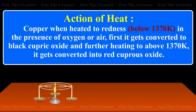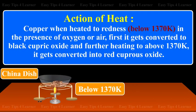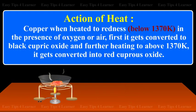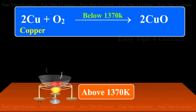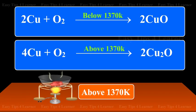Action of heat: Copper when heated to redness, i.e., below 1370 Kelvin in the presence of oxygen or air, first gets converted to black cupric oxide. On further heating above 1370 Kelvin, it gets converted into red cuprous oxide.